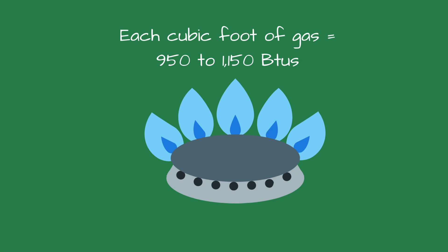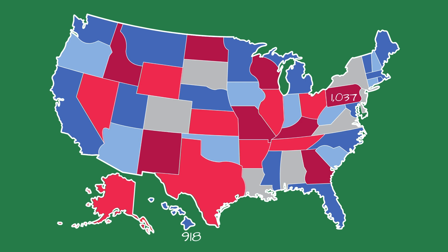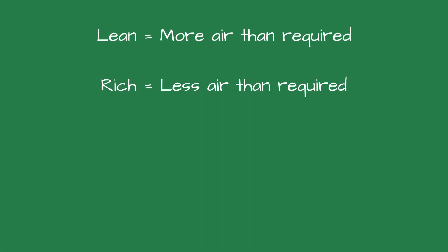If you are a flame watcher like me, you may notice what looks like sparklers at the tips of the flame — this could indicate lower BTU content. The BTU content also varies from state to state. Pennsylvania's average BTU content per cubic foot of gas is 1,037 BTUs, while Hawaii's average is 918 BTUs. Most experts use 1,000 BTUs per cubic foot as the industry standard. When more air is supplied than required, it's called lean, and when less air is supplied than required, the flame is referred to as rich.